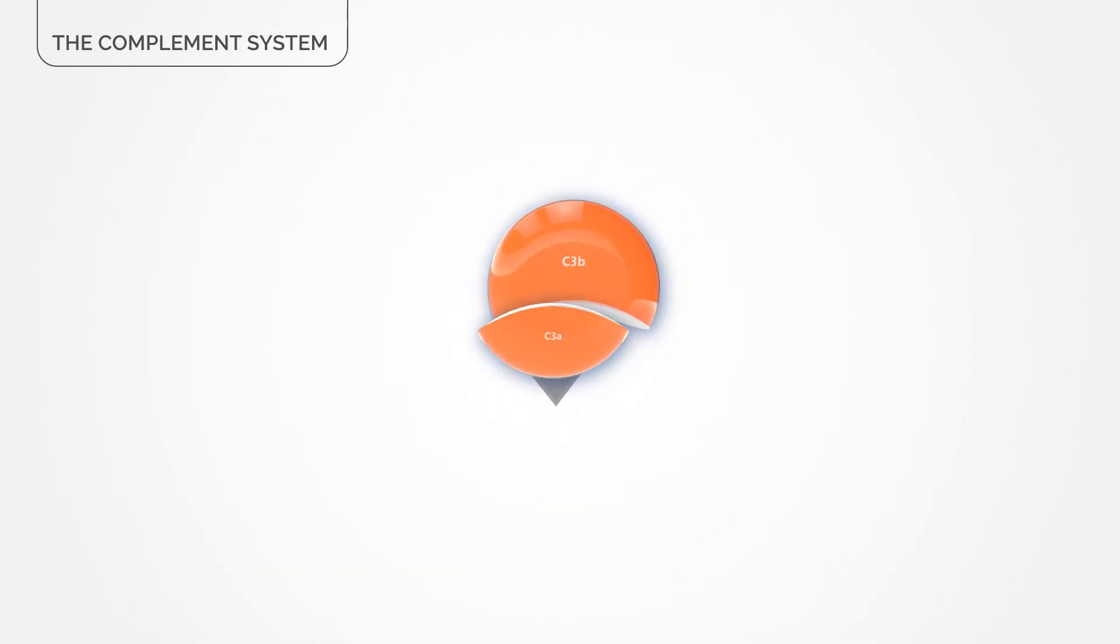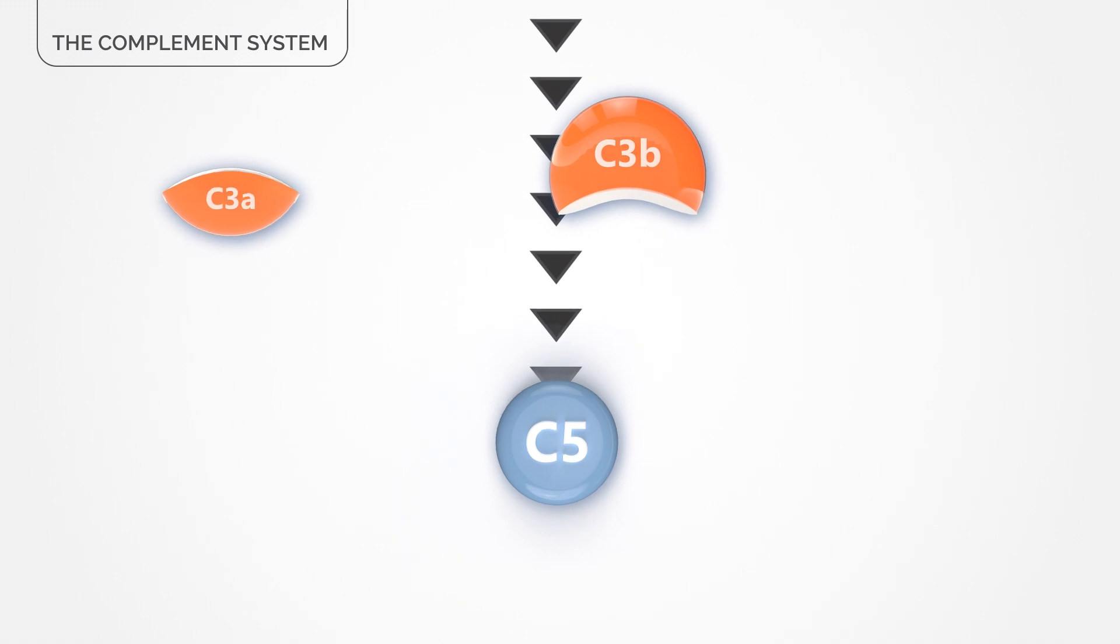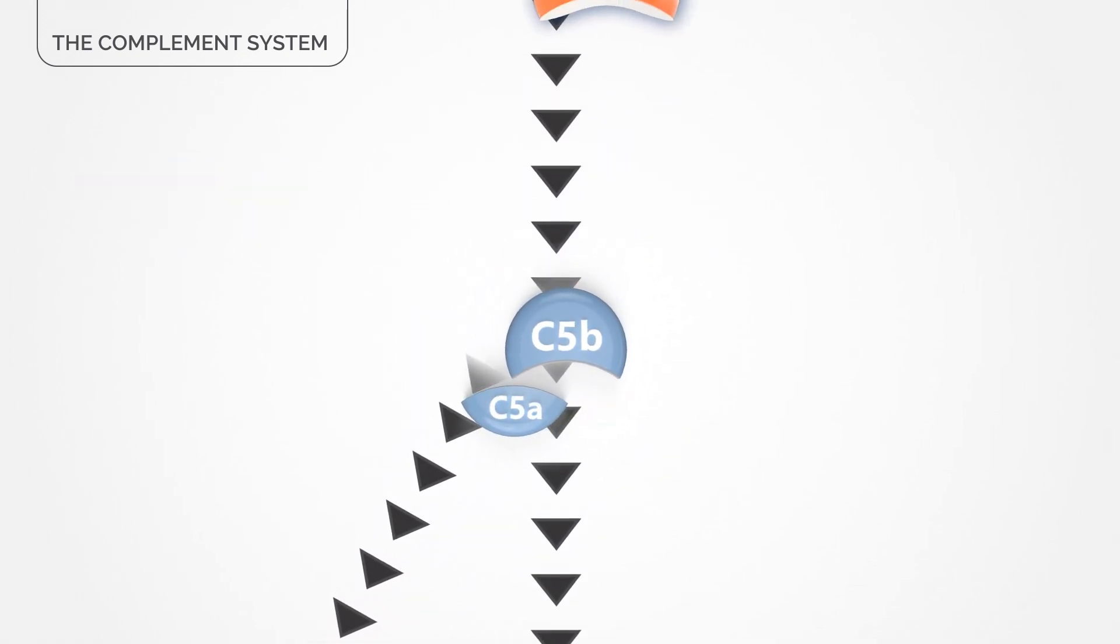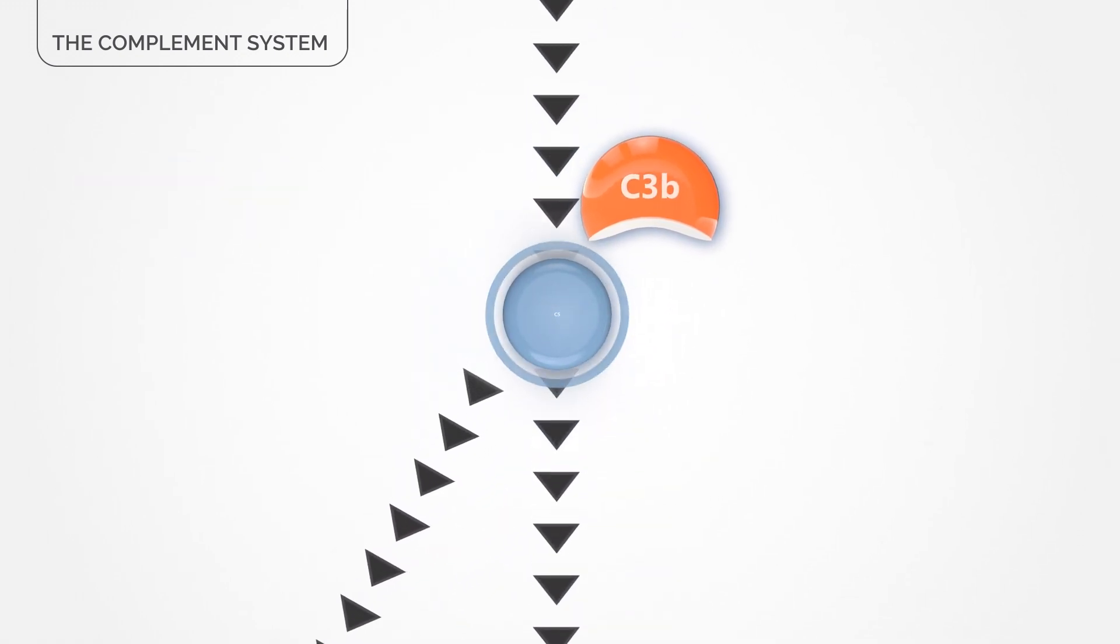The complement system consists of a cascade of proteins which activate each other by cleavage, the process of splitting each protein one by one.